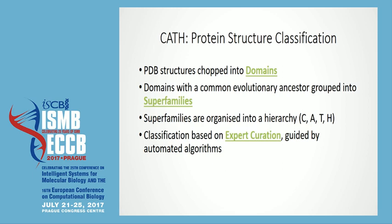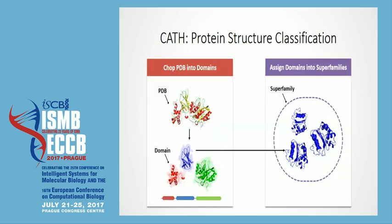The hierarchy is useful for browsing around the structural universe, but really the cluster we're most interested in is the homologous superfamily, which is talking about evolutionary relationships. Just to note that this classification is based on 20-odd years of expert curation, although it is guided by automated algorithms. In summary: structures from the PDB are chopped into structural domains, and each of those domains will be assigned into a superfamily where we have good evidence of a common ancestor.